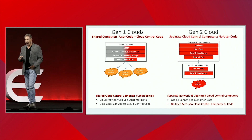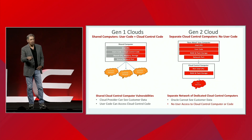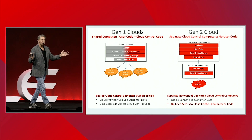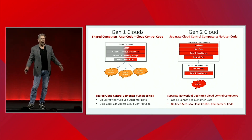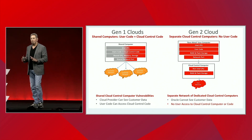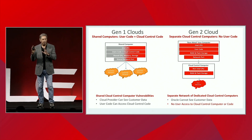So we've added a completely separate network of dedicated cloud control computers that not only protect the perimeter of the cloud — protect threats from coming from the outside and getting into the cloud — but we also form a perimeter around each individual customer zone, so customers can't get out of their zone and into your zone.